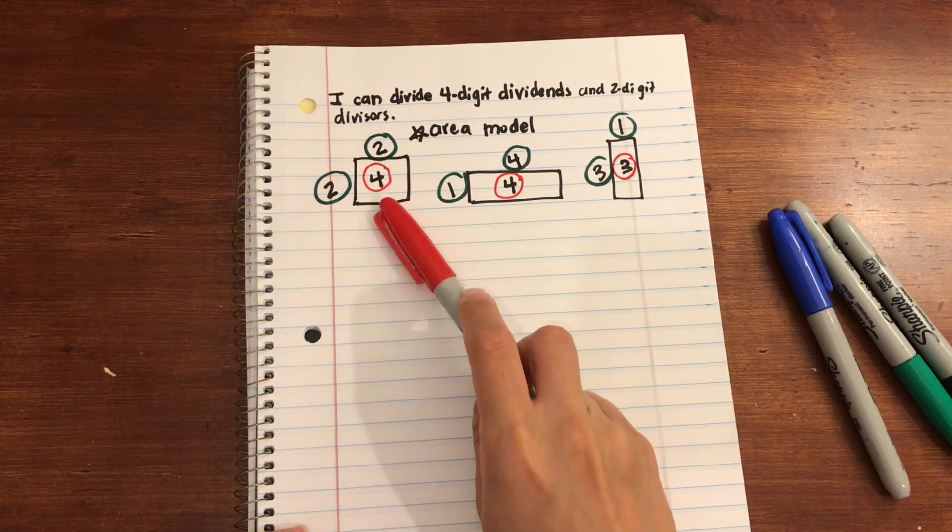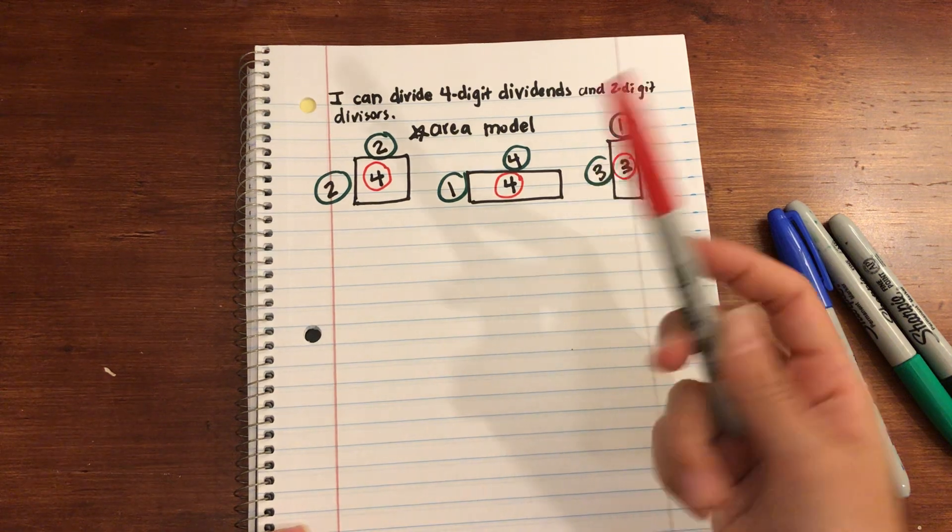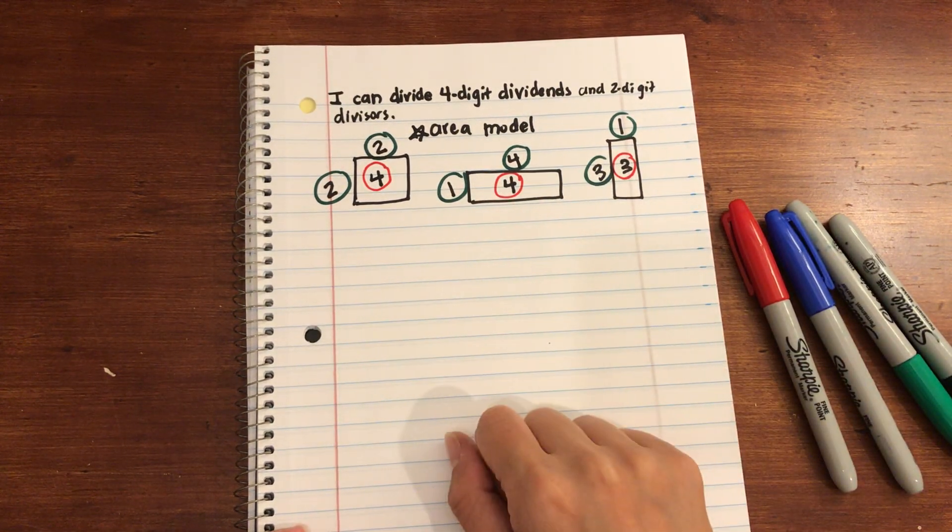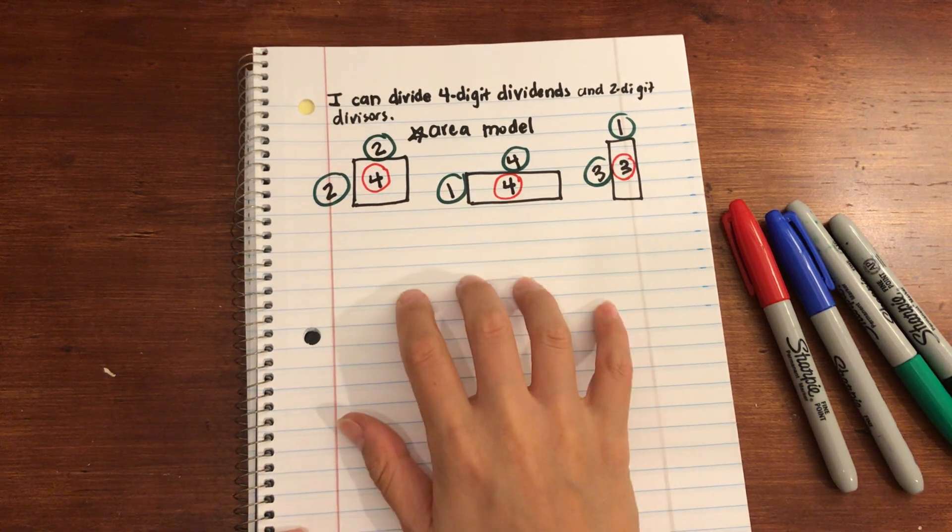So again, 2 times 2 is 4, 1 times 4 is 4, 3 times 1 is 3. Length times width is equal to the area. So these are area models very simply.